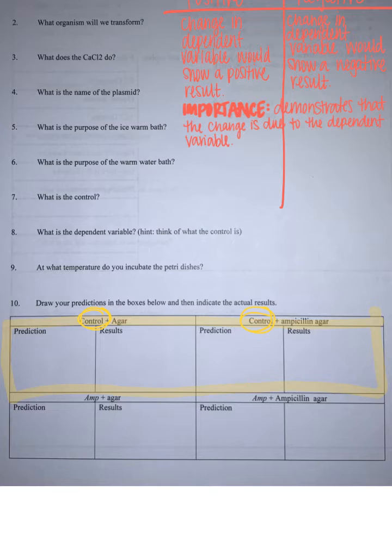My first box is my control with just the agar. There's no ampicillin, just the agar. You would expect bacteria to grow on this. So my prediction for this would be the presence of bacteria.